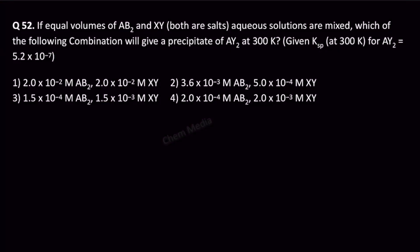Hello everyone, here's a question based on ionic equilibrium. If equal volumes of AB₂ and XY aqueous solutions are mixed, which of the following combinations will give a precipitate of AY₂ at 300 K? The solubility product of AY₂ at the same temperature is given as 5.2 × 10⁻⁷.